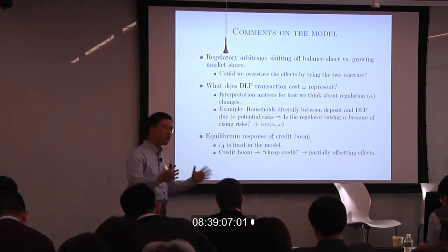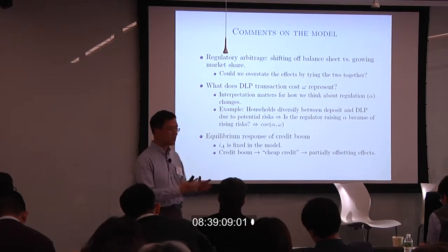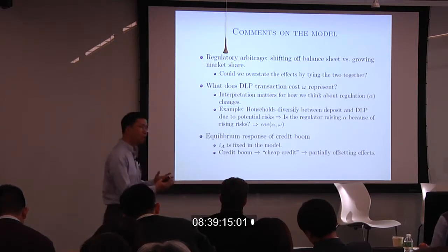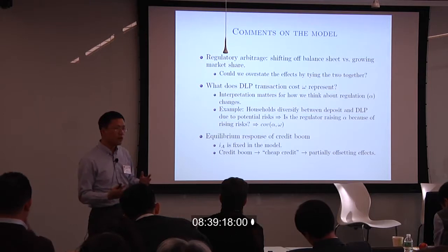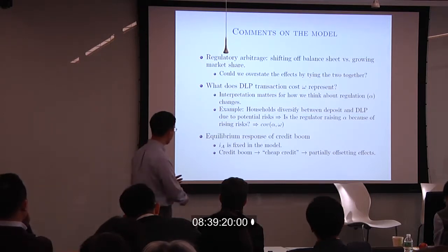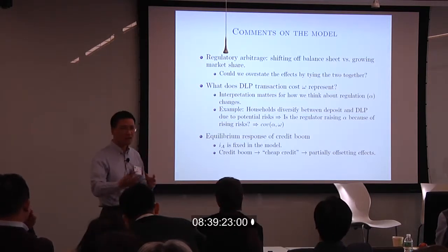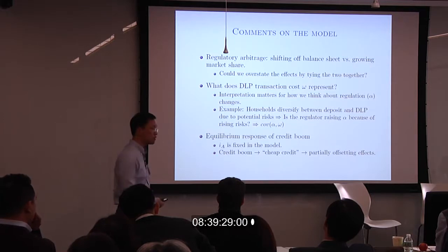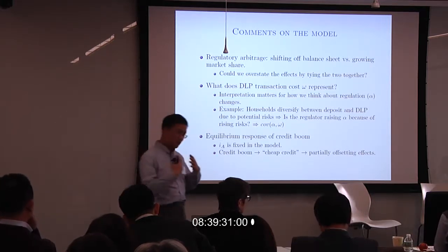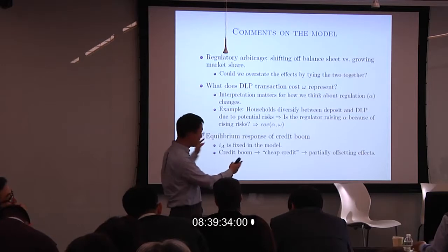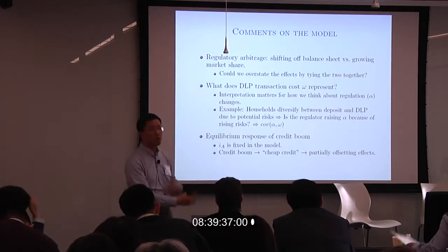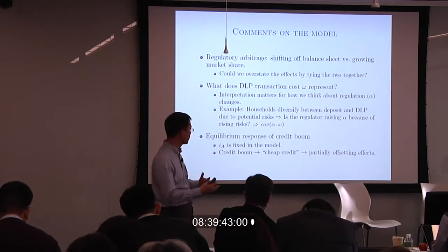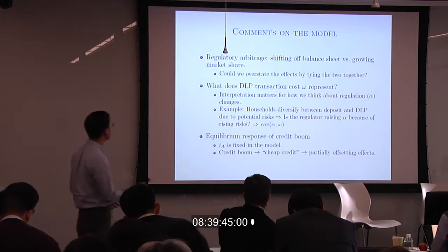The discussant also notes that for a credit boom explaining about a third of China's credit expansion, one should consider general equilibrium effects. The return on lending is held fixed in the model, but a credit boom of this scale could lead to an oversupply of credit and cheaper credit, which would partially offset the result. This is a quantitative point but relevant for assessing the channel's importance.